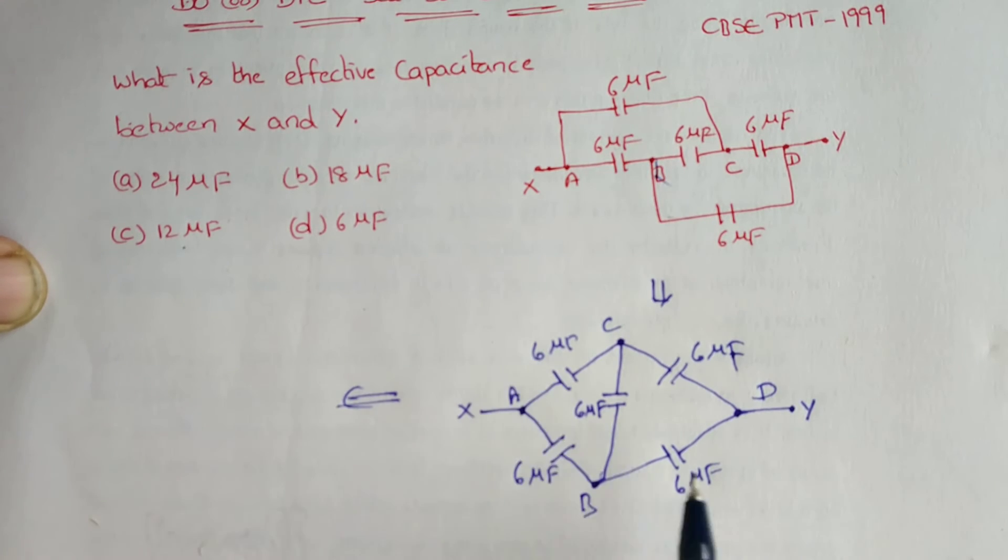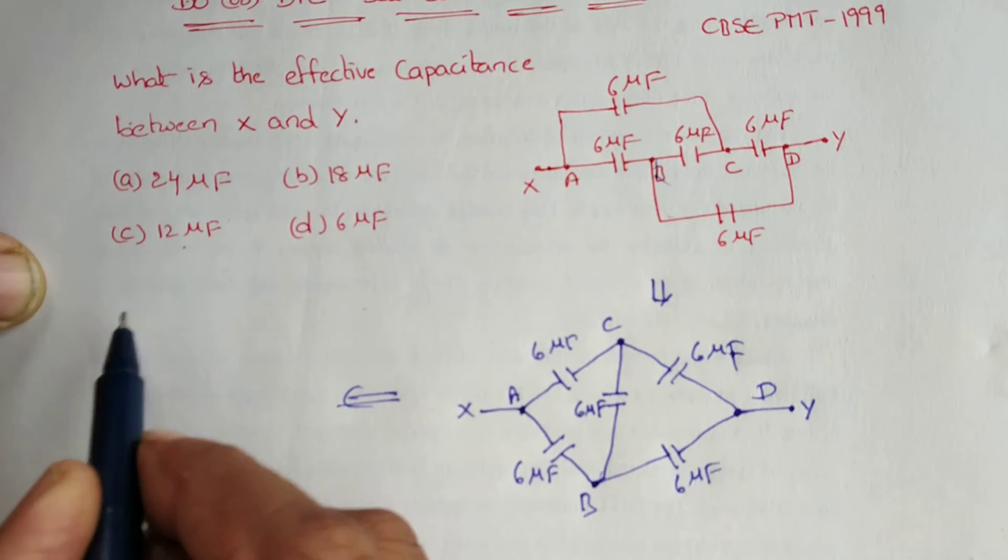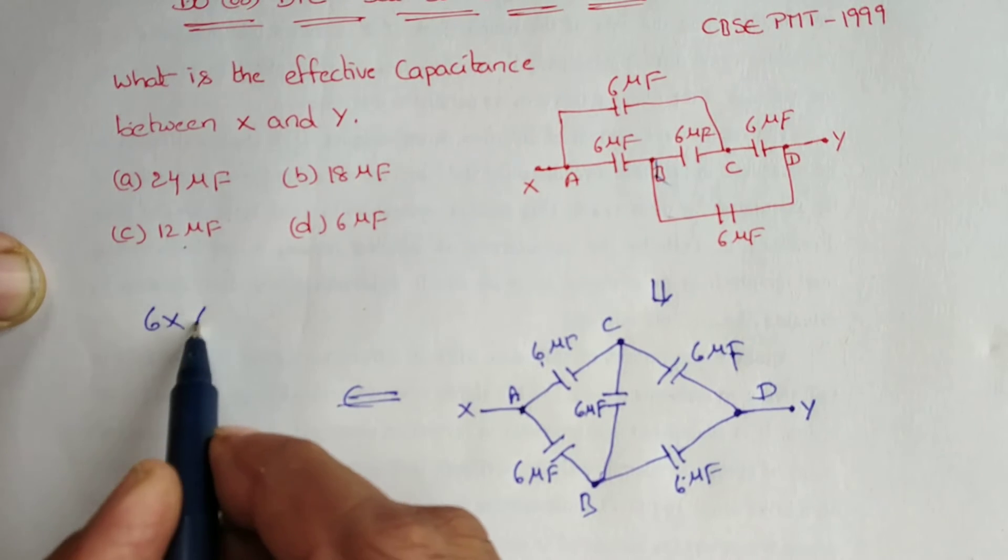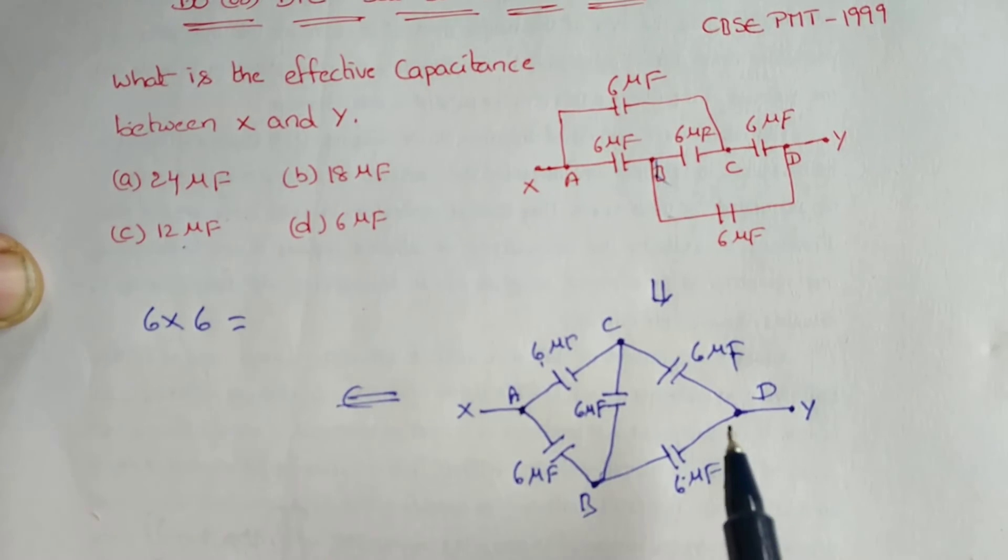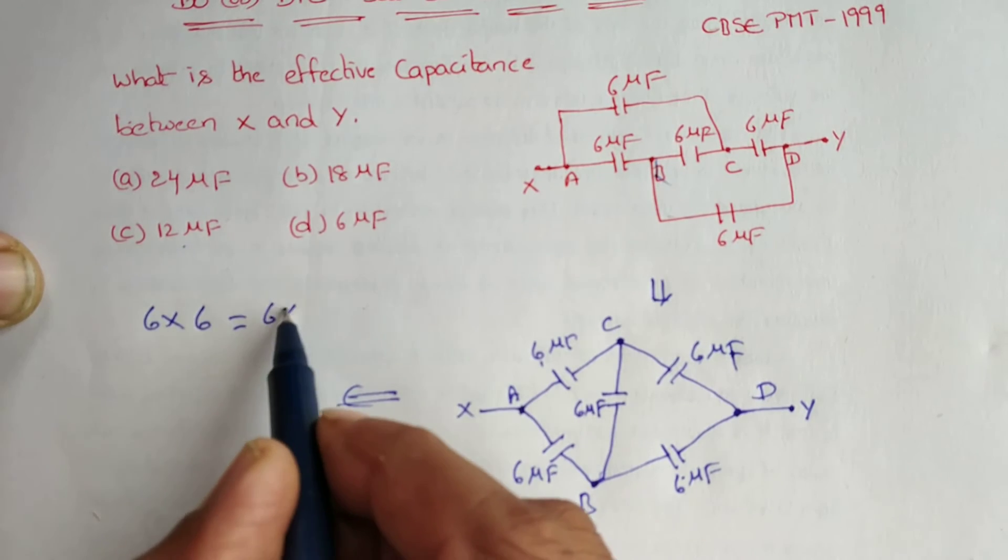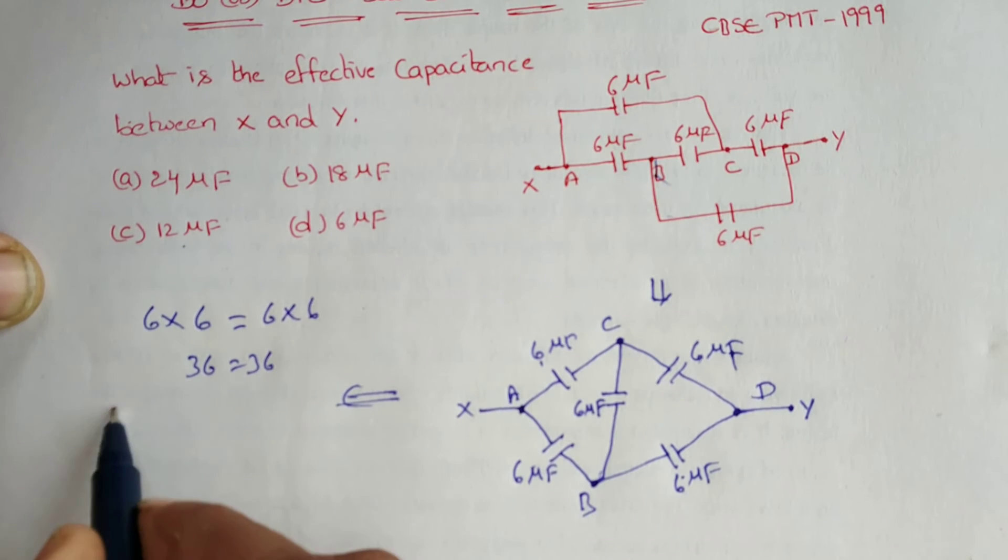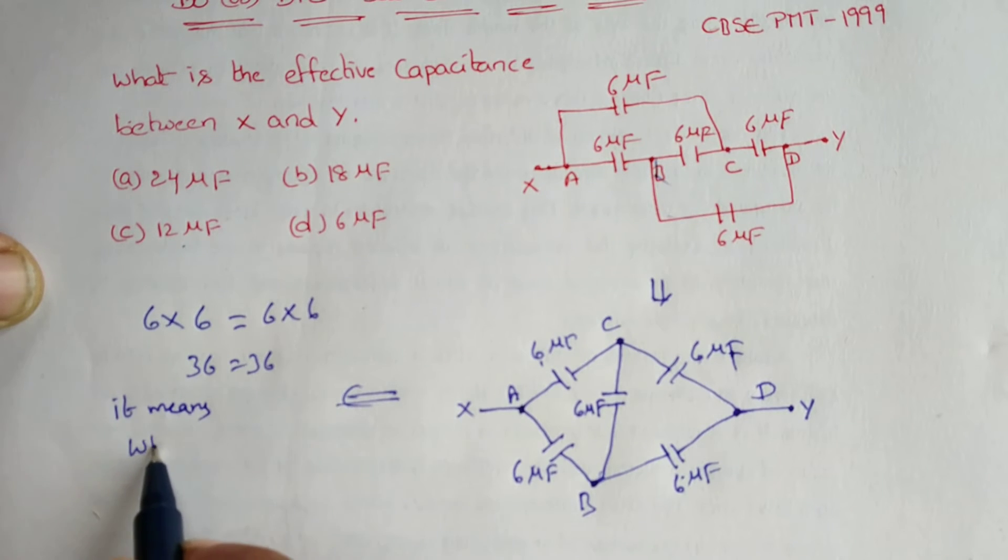Wheatstone bridge, we can multiply the opposite capacitors. One is 6 into 6, and the opposite is also 6 into 6. 36 equals 36. It means the Wheatstone bridge is balanced.